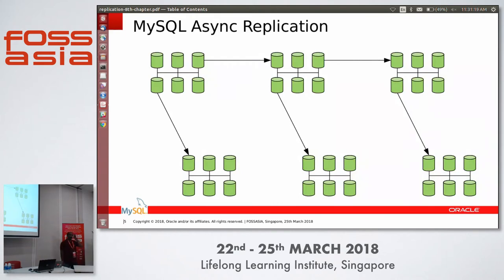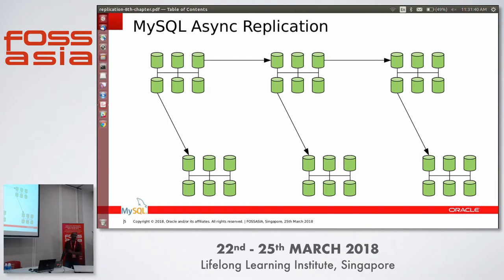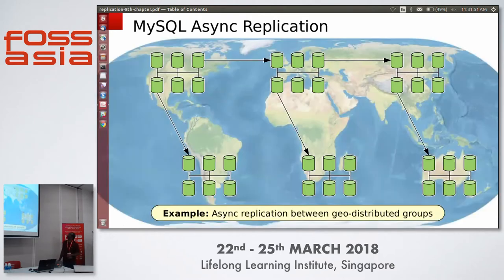This is the typical replication picture. Before 5.7, it used to be just one particular node with a link between them. Now that we have group replication, we can have a cluster of nodes. The link between clusters is asynchronous replication, and I am going to talk about asynchronous replication. There is a presentation at 3 o'clock about group replication between clusters. You can put nodes anywhere in the world and asynchronous replication will work across them.